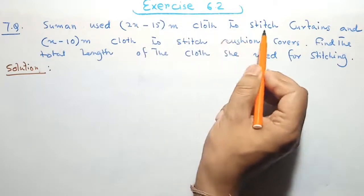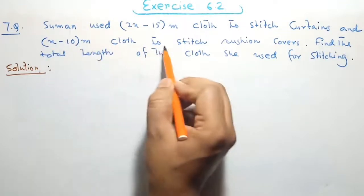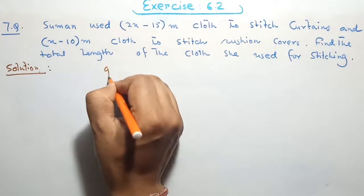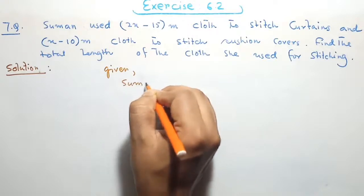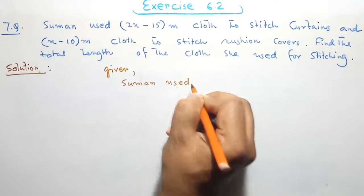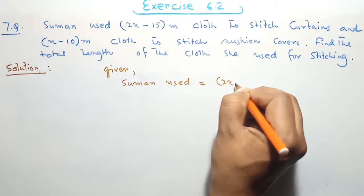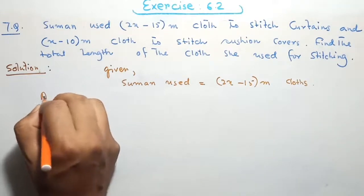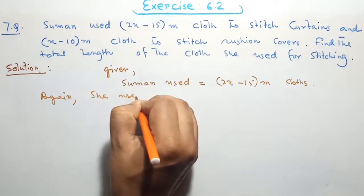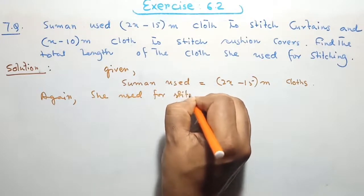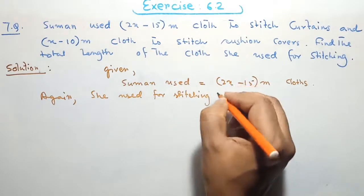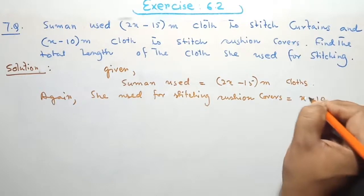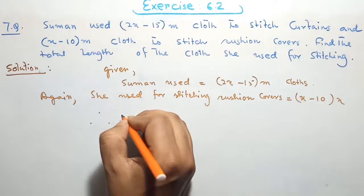Question 7. Someone used twice x minus 15 meters of cloth to stitch curtains and x minus 10 meters of cloth to stitch cushion covers. Find the total length of the cloth she used for stitching. Given: she used 2 times (x minus 15) meters of cloth for curtains, and she used x minus 10 meters for stitching cushion covers.